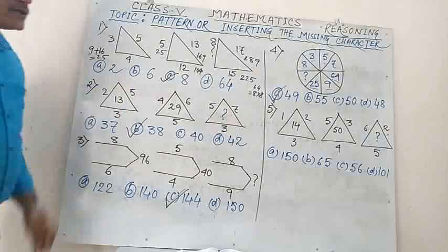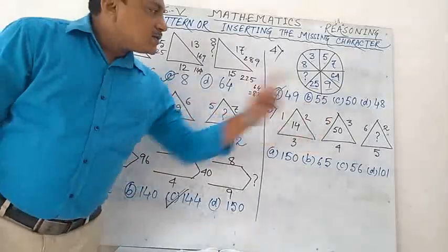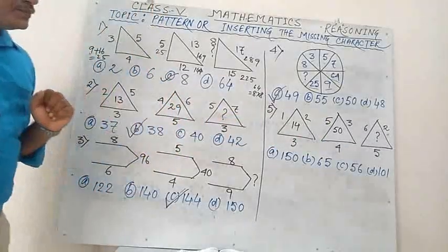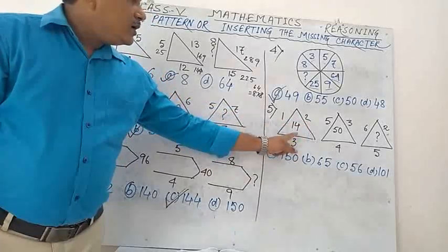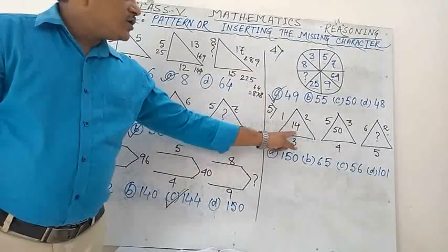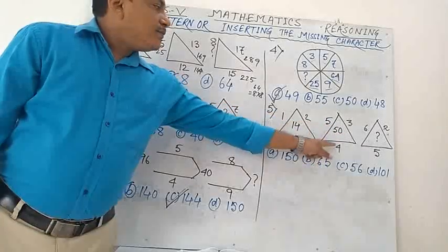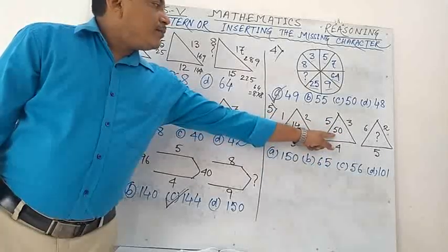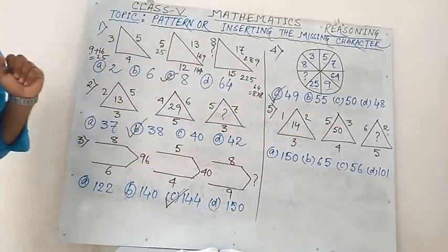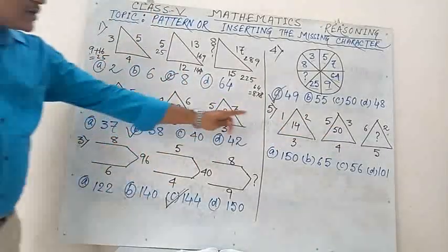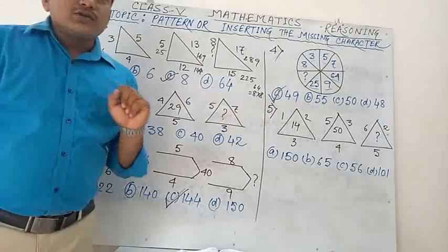Number 5. Three triangles with sides: 1, 2, 3 — triangle contains 14; next: 5, 3, 4 — contains 50; next: 6, 2, 5 — question mark. Just look at the first one — how does 14 come? We have to find the relation between the sides of the triangle.